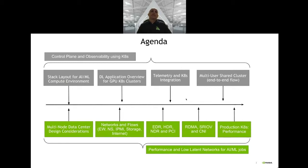Multi-node data center considerations are involved in the cluster design itself, including heating and cooling, rack layout, along with five network types: east-west, north-south, IPMI, storage, and internet networks. EDR, HDR, NDR, and PCI are bandwidth-related: EDR is 100 Gbps, HDR is 200 Gbps, and NDR is 400 Gbps links. GPU-to-GPU communication happens in the east-west direction, and we also need to integrate RDMA, SRIOV, and CNI into the Kubernetes cluster, concluding with production Kubernetes experience and performance numbers.